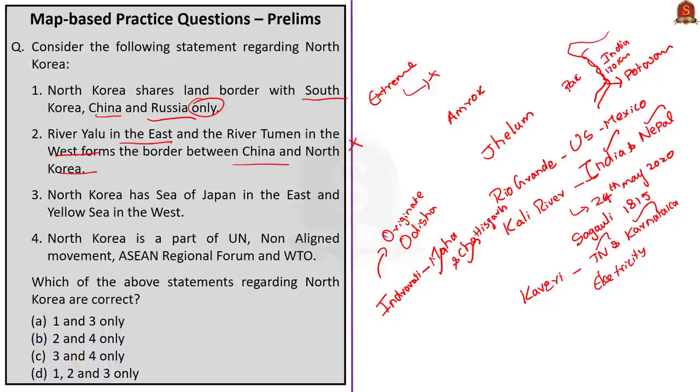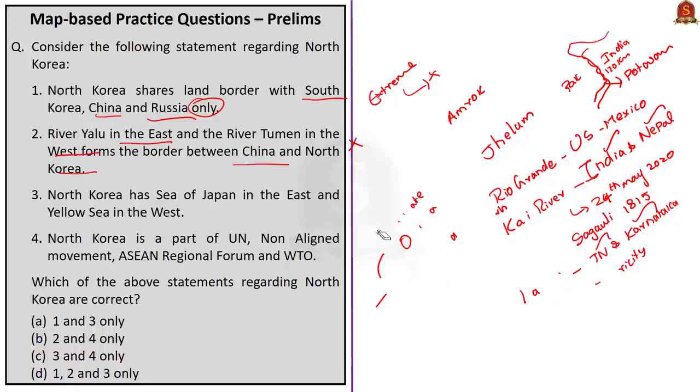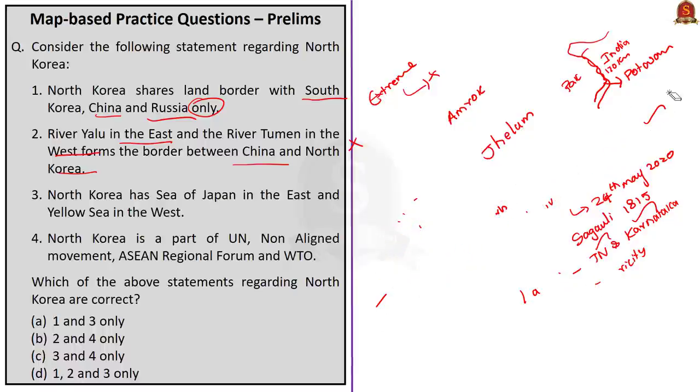In the prelims map-based questions, they may give some rivers and ask you what rivers form the political boundaries between two entities. Take a look and look for all other rivers that form political boundaries.